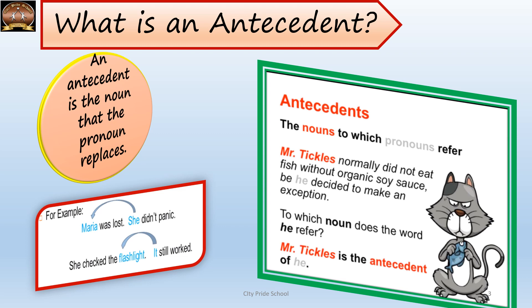Children, 'antecedent' is a term associated with pronouns. An antecedent is a noun which is replaced by its corresponding pronoun. For example, 'Maria was lost. She didn't panic.' Here, 'she' is replacing Maria, so Maria is the antecedent of 'she.' Similarly, 'She checked the flashlight. It still worked.' Here 'it' is replacing flashlight, so flashlight is the antecedent of the pronoun 'it.' So the noun to which a pronoun refers is the antecedent.